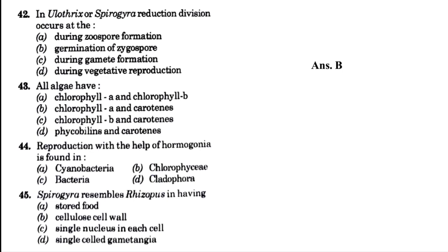All algae have — blank: chlorophyll A and chlorophyll B, chlorophyll A and carotenes, chlorophyll B and carotenes, or phycobilin and carotenes. The answer is option B, that is chlorophyll A and carotenes, because chlorophyll A is essential for every type of plant to carry out photosynthesis. Reproduction with the help of hormogonia is found in — blank: cyanobacteria, Chlorophyceae, bacteria, or Cladophora. The answer is option A, that is cyanobacteria. Spirogyra resembles Rhizopus in having — blank: stored food, cellulose cell wall, single nucleus in each cell, or single cell gametangia. The answer is option D, that is single cell gametangia.